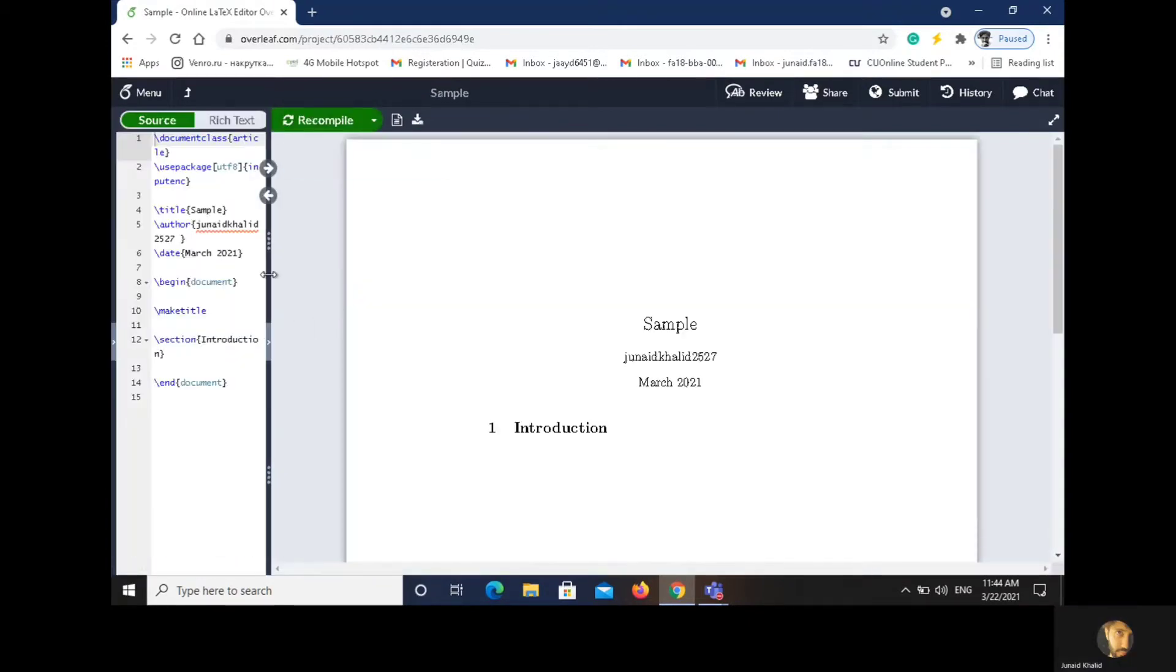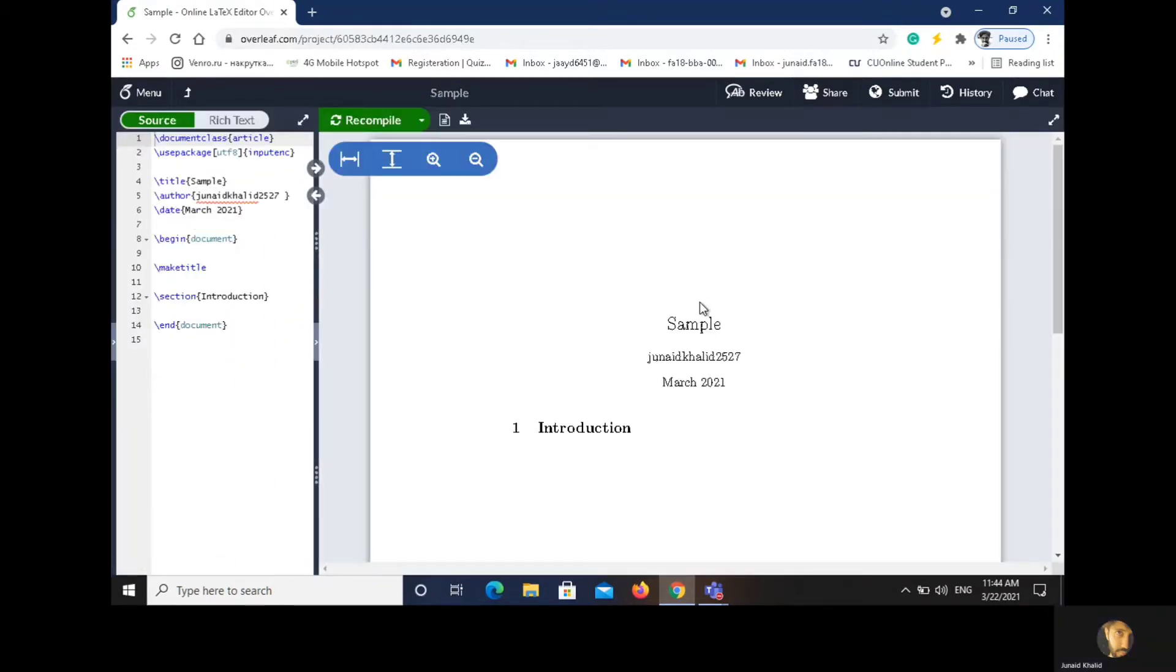Just leave the first two and from here you can change the title, author and date. Title: sample document. And you have to compile from here. You can also compile by using Ctrl and Enter.